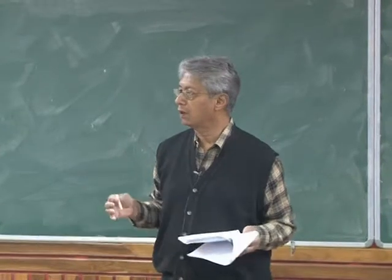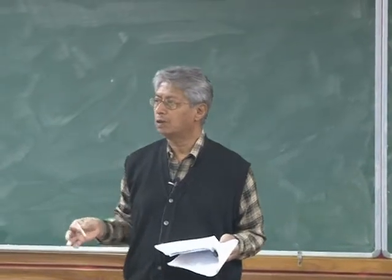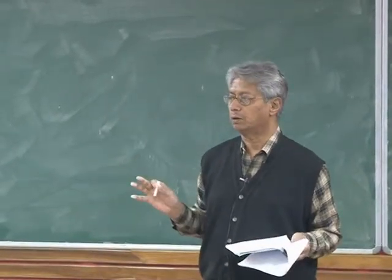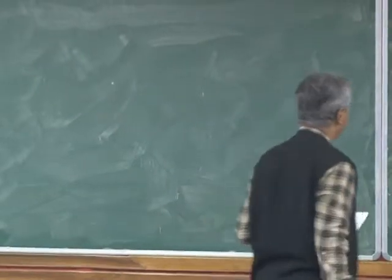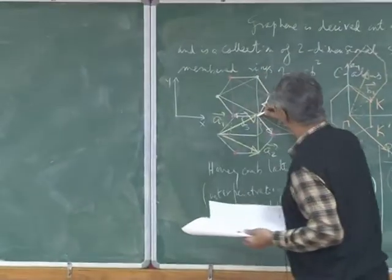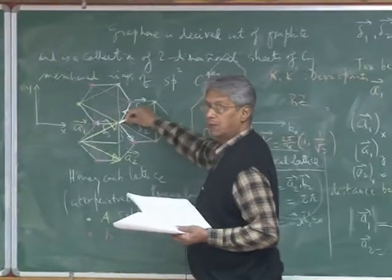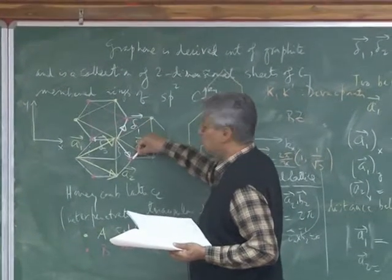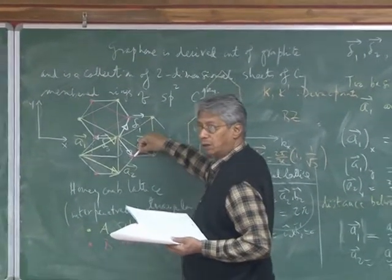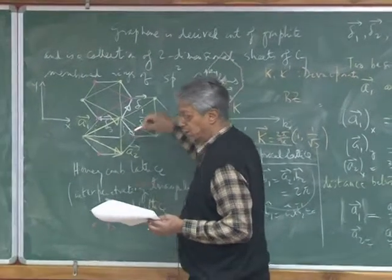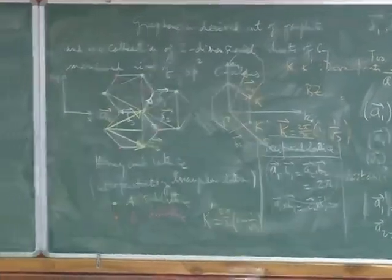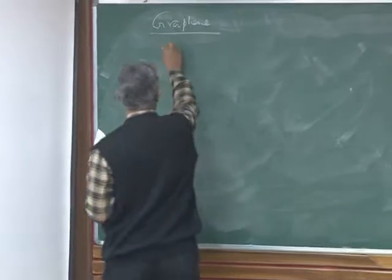So now for graphene, let us write down the simplest tight-binding analogy. The picture is that you connect only from the yellow sublattice A to the red sublattice B by hopping over to the nearest sublattice B. So what will be your fundamental tight-binding model?